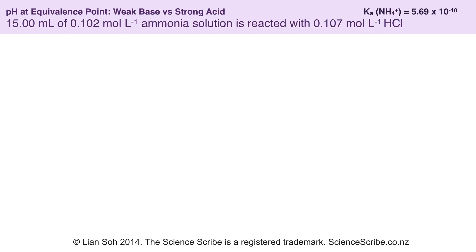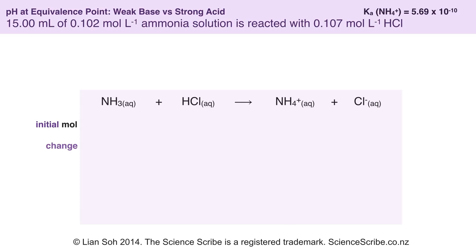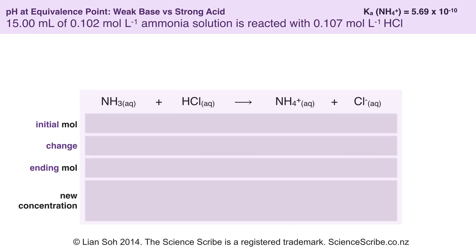Now let's run a different titration — this time a weak base against a strong acid. My weak base is an ammonia solution: 15 mL at 0.102 mol/litre, and my strong acid is hydrochloric acid. Same as before, we'll run through an equation and an ICE table. We work out the initial moles of ammonia in the flask using N = C × V, with the concentration and volume given in the question.